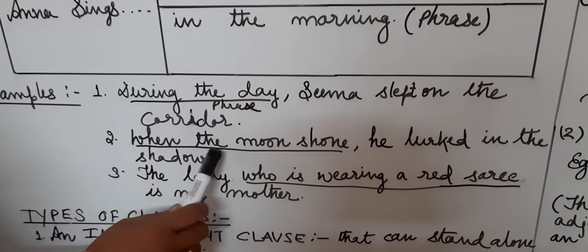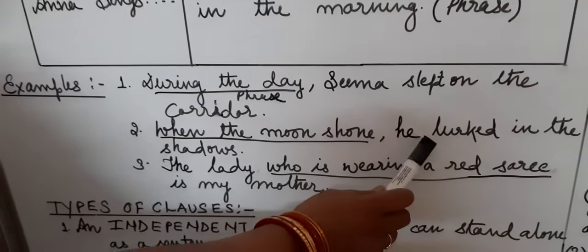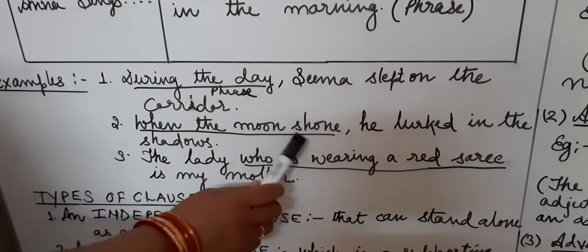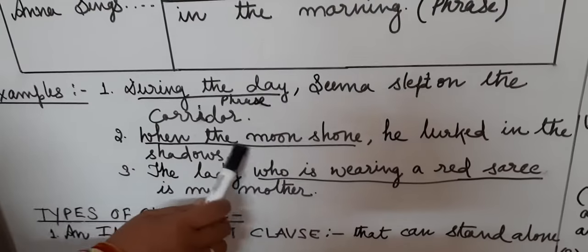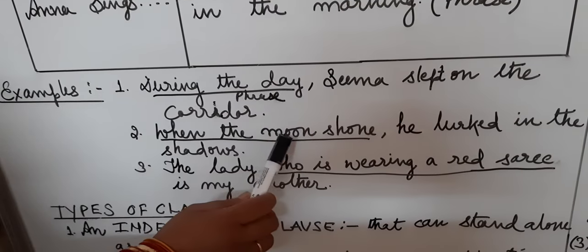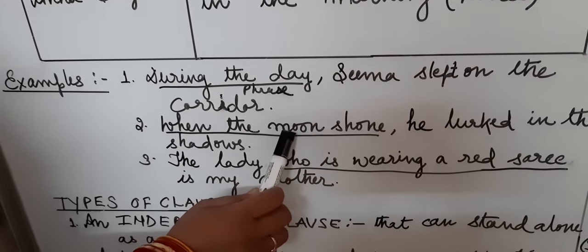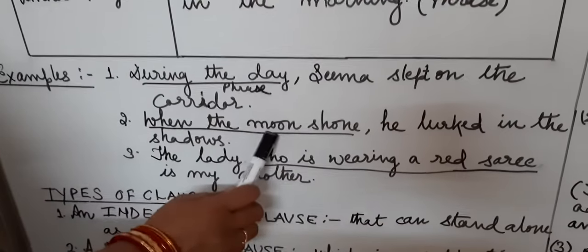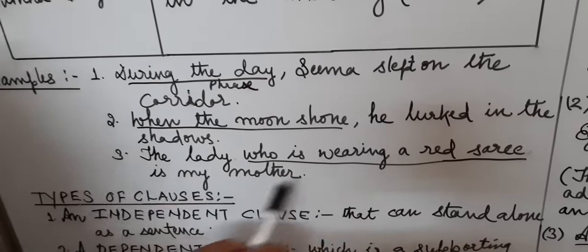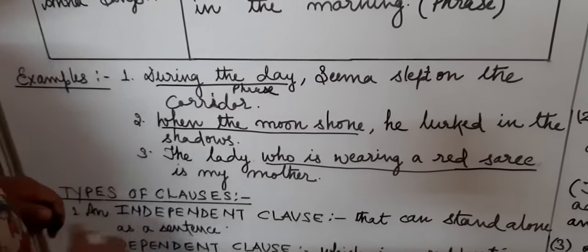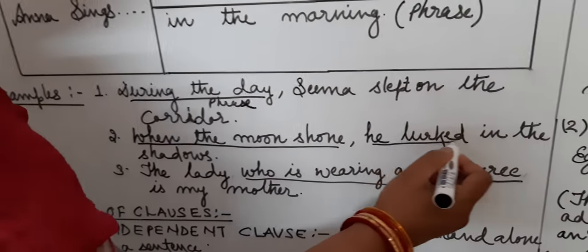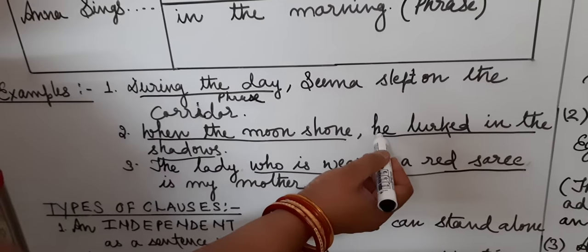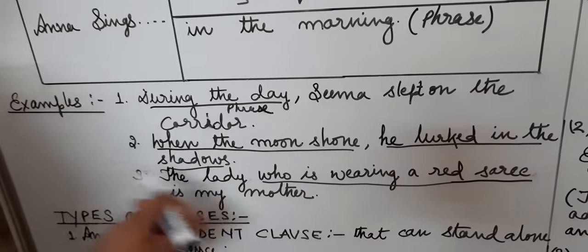Next sentence: 'When the moon shone, he lugged in the shadows.' See here 'when the moon shone' — it is a clause because here there is a subject and a verb. Subject bhi hai, verb bhi hai. Next, 'he lugged in the shadows' — this is also a clause. He is subject and lugged is a verb.